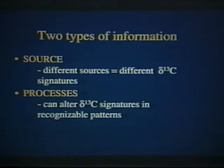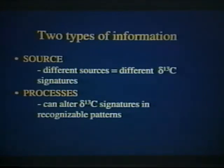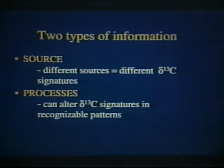We have found that stable carbon isotopes provide us with two basic types of information. The first is information about source, because different compounds retain different, distinct isotopic signatures indicative of their source or origin. The second type is information about processes. Different subsurface processes such as volatilization or biodegradation can fractionate or alter delta C-13 signatures in characteristic and recognizable ways. So stable carbon isotopes provide us with important tools for examining the origin or the fate of dissolved organic contaminants.